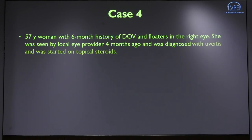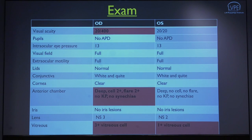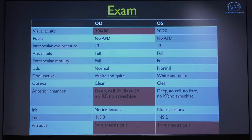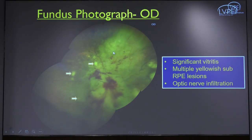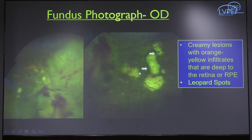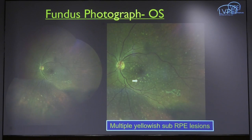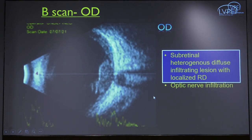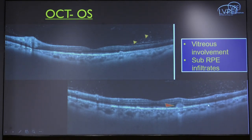This 57-year-old lady presented with a six-month history of decreased vision and floaters in one eye. She had been diagnosed with uveitis by a local ophthalmologist and started on topical steroids. Visual acuity was 20/400 in the right eye with signs of inflammation. On examination there were extensive sub-retinal infiltrates, sub-RPE lesions, vitritis, and optic nerve infiltration — well-defined creamy yellowish subretinal lesions and leopard spots. The other eye showed multiple sub-RPE lesions. Ultrasound revealed a subretinal heterogeneous mass with localized retinal detachment. These findings of sub-RPE infiltrates, optic nerve infiltration pointed not toward uveitis but toward lymphoma.